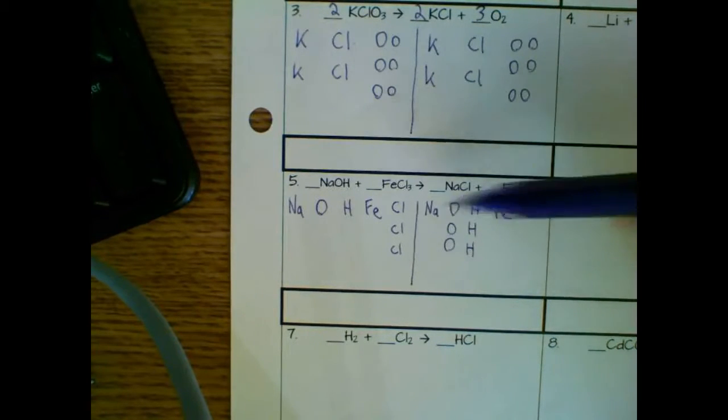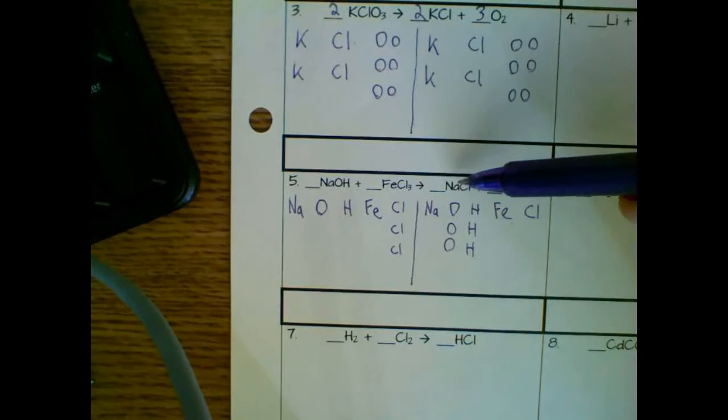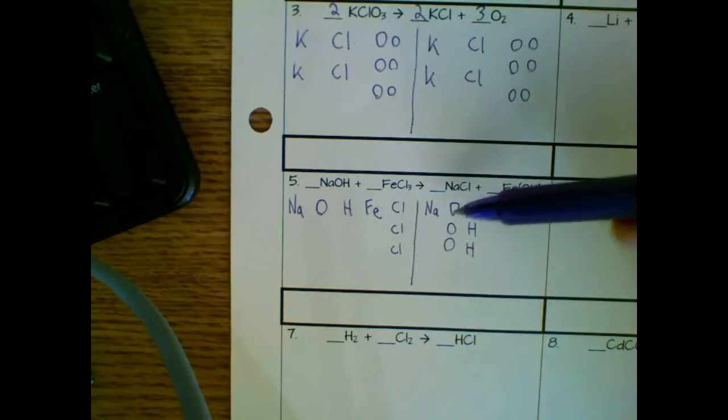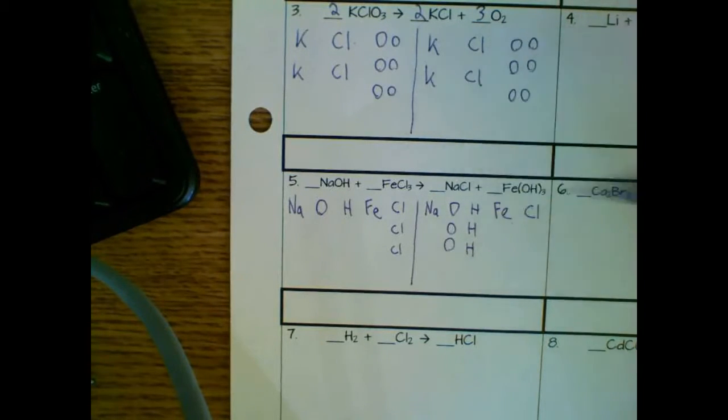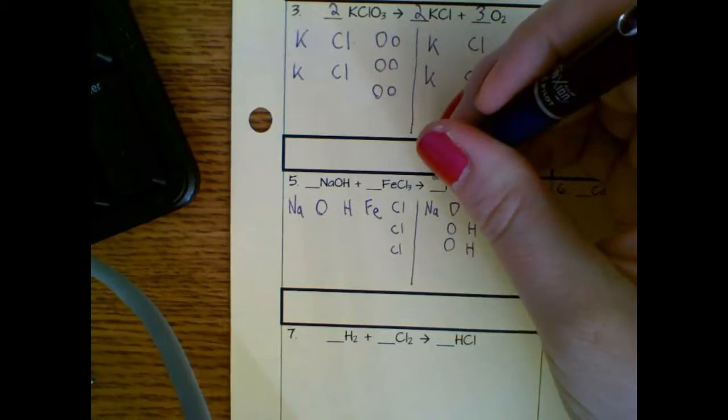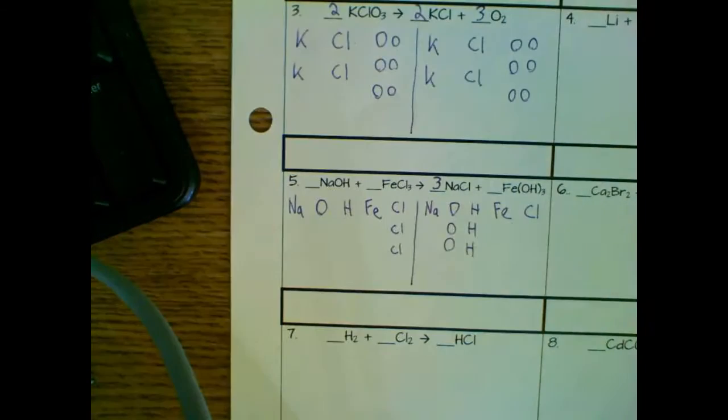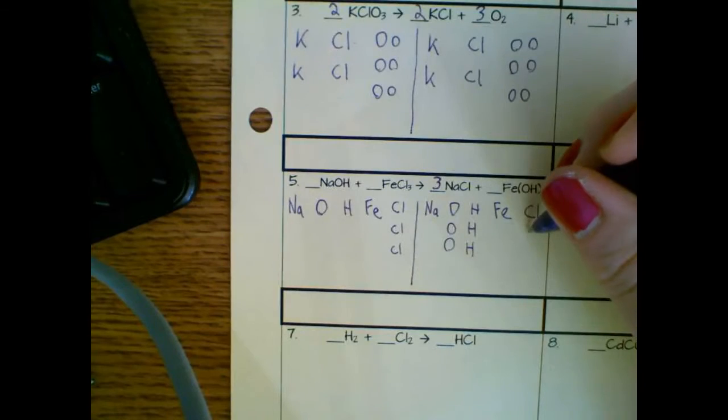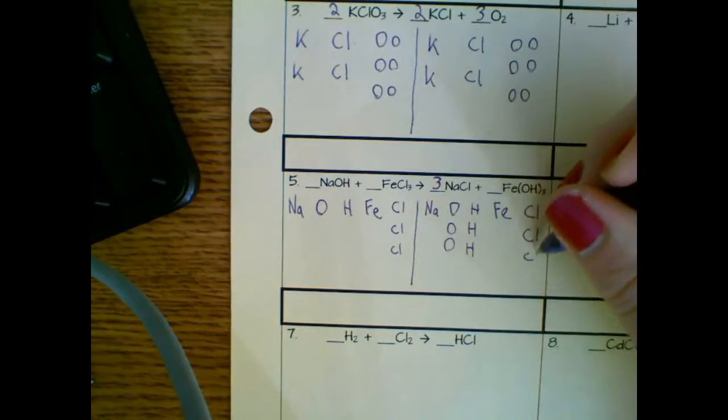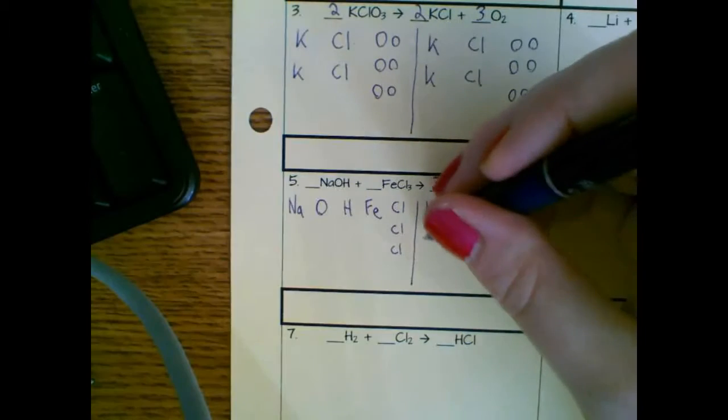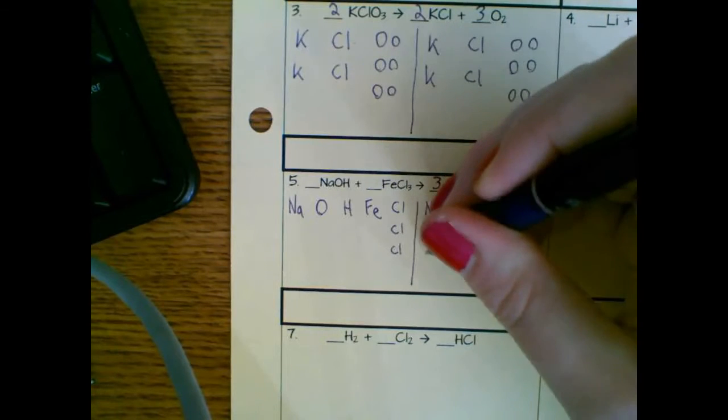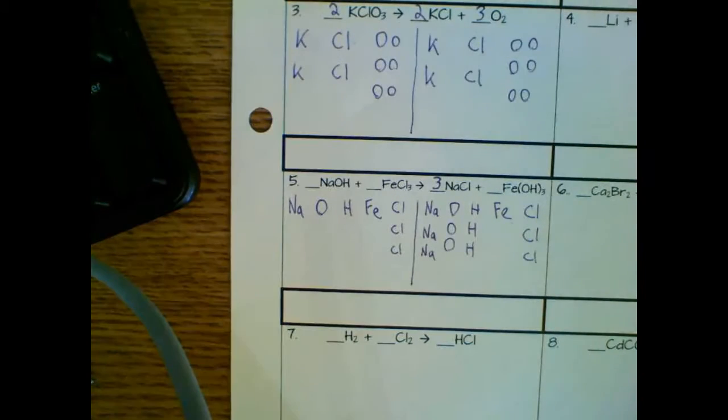If I know that I need three CL's on this side, that means I need to go to whatever chemical formula has a CL in it and put a three in for my coefficient. So now I have three CL's. I also have three NA's. I'll deal with that later though. I'm not too worried. Okay.